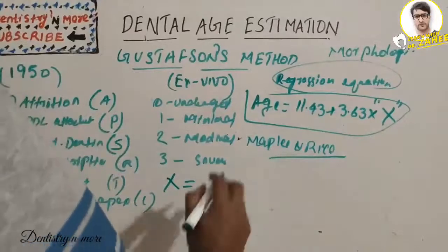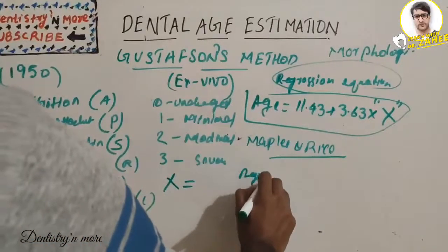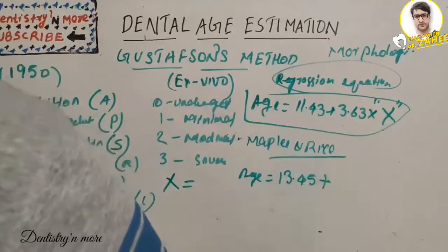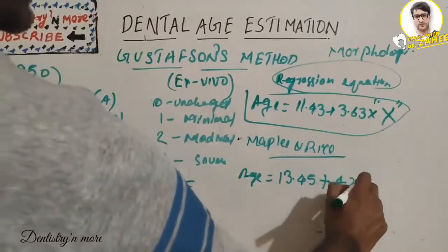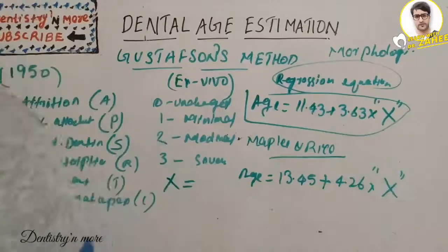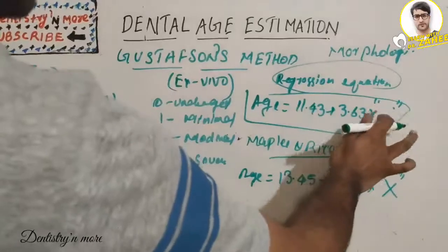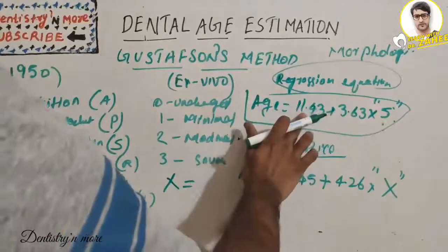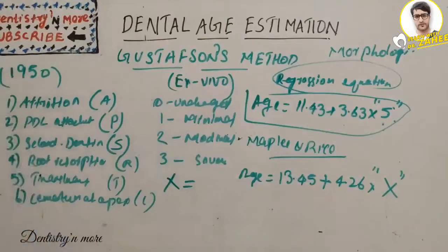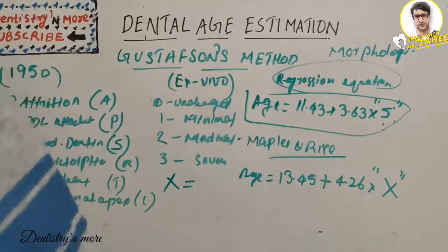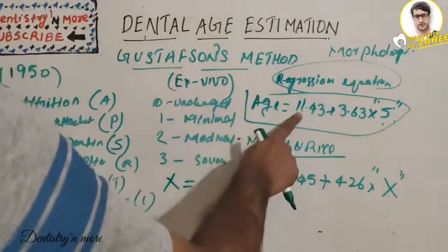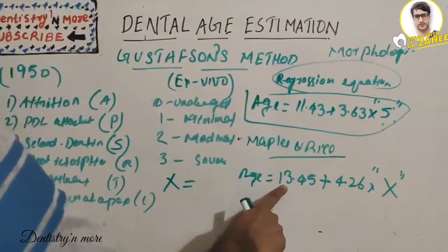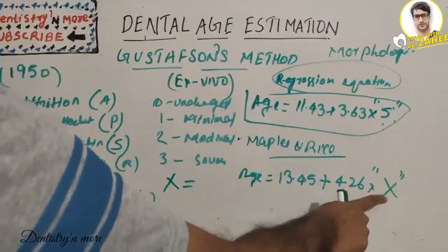Maples and Rice, two scientists, corrected Gustafson's formula. They changed the constant value: Age = 13.45 + 4.26 × X. So suppose X is 5 — in Gustafson's formula you multiply 3.63 × 5 and add 11.43, whereas in Maples and Rice you use 13.45 and multiply 4.26 × 5. Both constant and coefficient values are larger in the Maples and Rice correction.